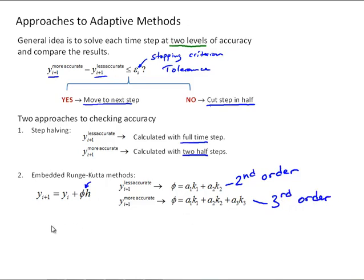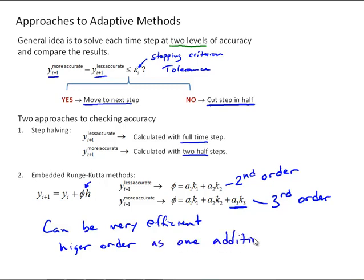And this approach can actually be very efficient because what we can do is we can set up a Runge-Kutta method such that the third order method uses the same first two terms. So the a1 and k1, those first constants and function evaluations, are the same as for the second order method. So our higher order method can be formulated as one additional term to the lower order.